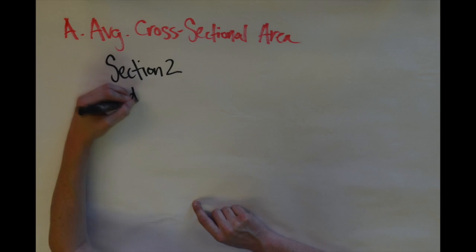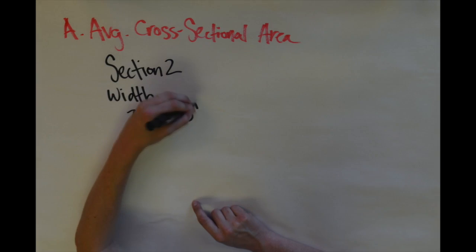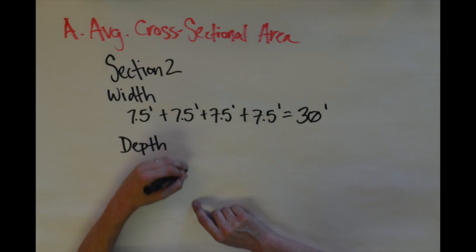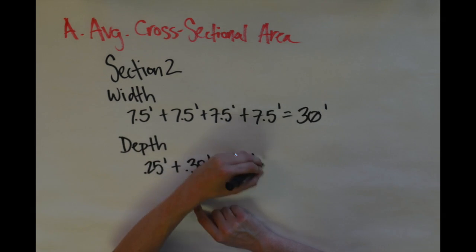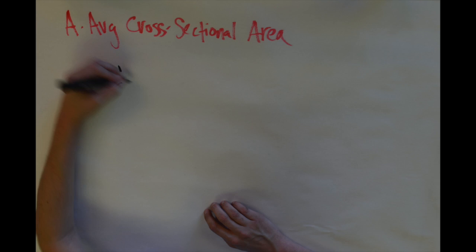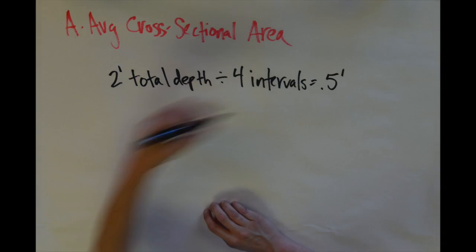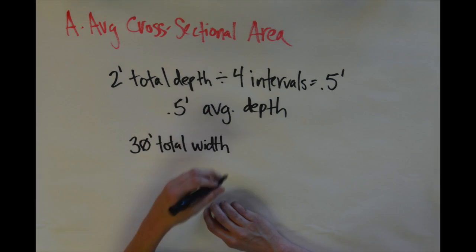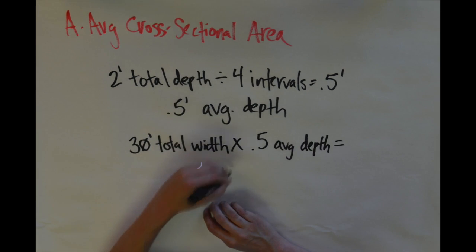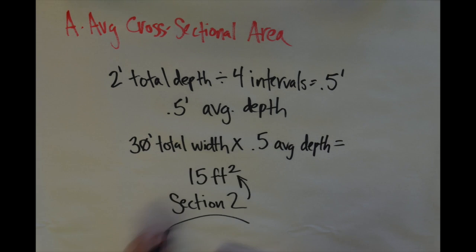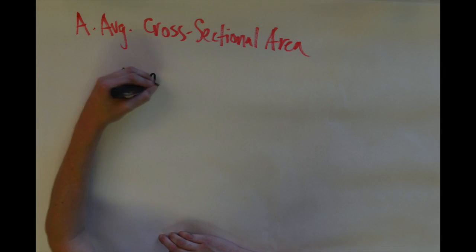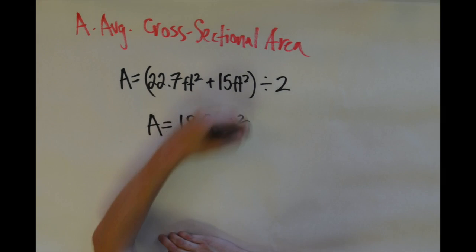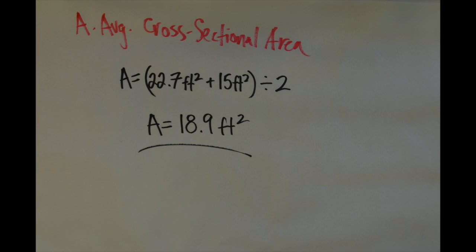Now we're going to do the same for section 2. We're going to total up the total width and then total up the total depth. Just like last time, we take the total depth and divide that by the four intervals, which gives us the average depth. Then we take the total width, multiply that by the average depth. Now we take the figures we got for section 1 and section 2, divide those by 2, and that gives us A — an answer of 18.9 feet squared.